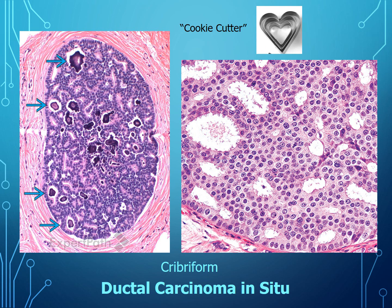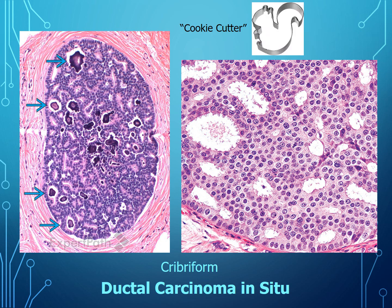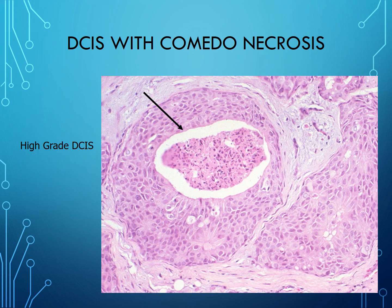Another common pattern of DCIS is high nuclear grade with comedo necrosis. You can see the nuclei are much larger, mitoses are present, and in the center is necrosis. This is DCIS with comedo necrosis — a common pattern of ductal carcinoma in situ.